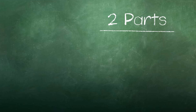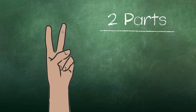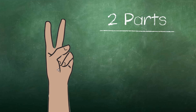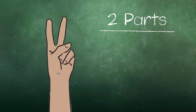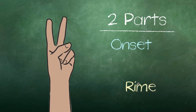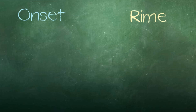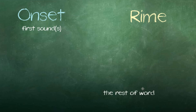Before I teach rhyming, I would start by explaining to students that there are two parts of words: the onset and the rhyme. I would tell them that the onset is the first sound or sounds of any word, and that the rhyme is the rest of the word.